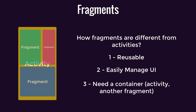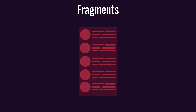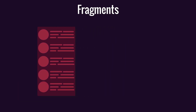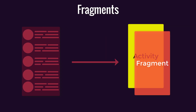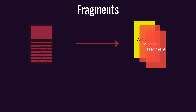Fragments are incredibly useful when you want to create different layouts for different screen sizes or orientations. For example, on a phone device, the UI might be just an activity that hosts a single fragment. Say you're showing recent news titles, and whenever the user clicks on one, a new fragment is added on top of the current one to show the details of the clicked news heading.